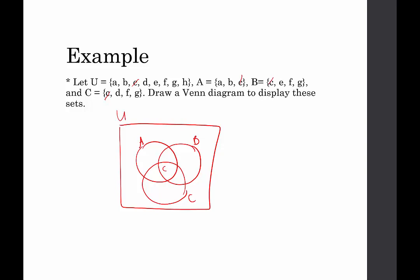The other overlap regions: this one is elements that are only in A and B but not also in C. Is there anything in A and B? No, so we're going to leave this region blank — nothing goes in there because there is no overlap between A and B besides element C, which we've already placed. The region for A and C — do A and C have anything in common? No, so we leave that one blank too.